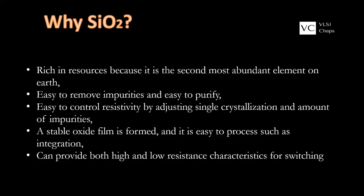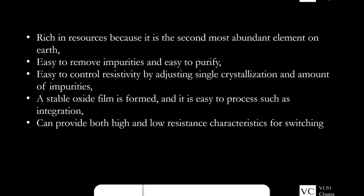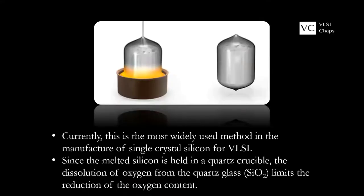Nowadays, a high level of purity — approximately 99.9999% — has been attained. This purified silicon is in the shape of a cylindrical ingot having a perfect monocrystalline structure with the same crystal orientation throughout.